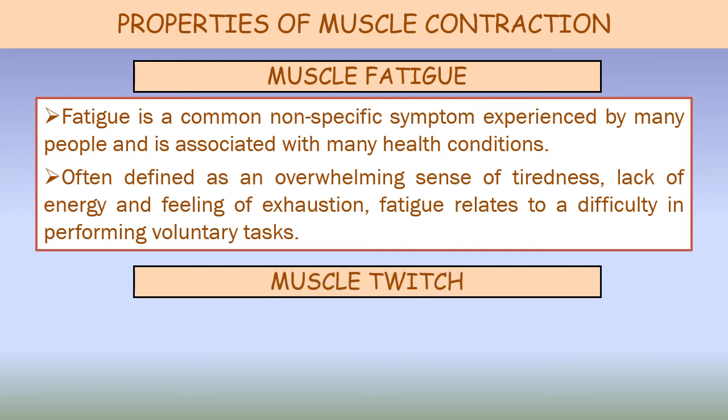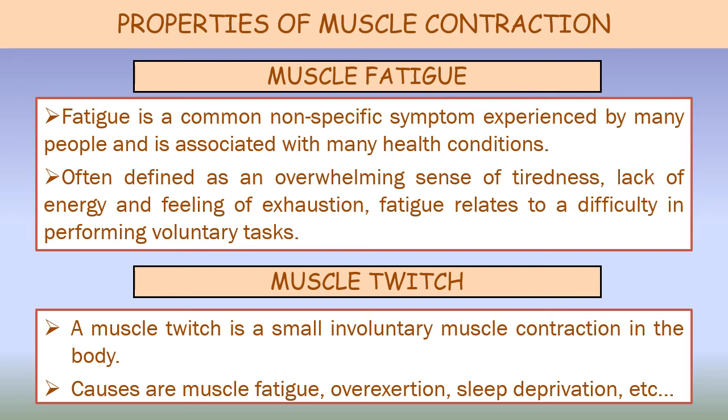Muscle twitch: a muscle twitch is a small involuntary muscle contraction in the body. Causes of muscle twitch may include muscle fatigue, over-exertion, sleep deprivation, intake of too much caffeine and alcohol, excessive exercise causing electrolyte imbalance through sweating, dehydration, stress and anxiety, and deficiency of calcium, magnesium, or vitamin D.